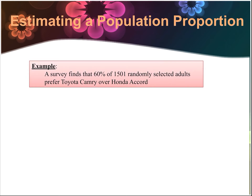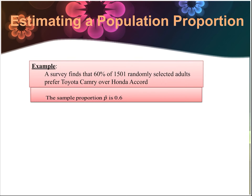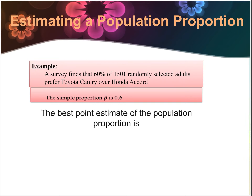Let's do a quick example. A survey finds that 60% of 1,501 randomly selected adults prefer Toyota Camry over Honda Accord. The sample proportion, p-hat, is 0.6 or 60%. This is a sample because it was a smaller survey — not all adults in the entire world — so it's p-hat. The best point estimate of the population proportion is 0.6.